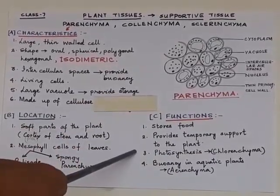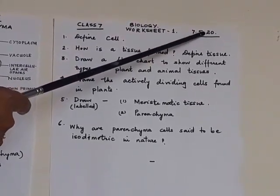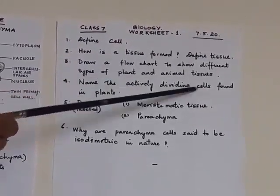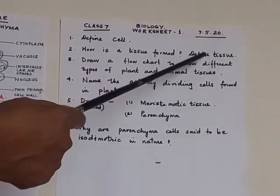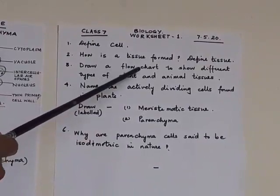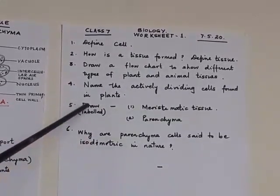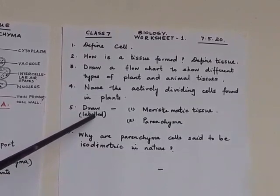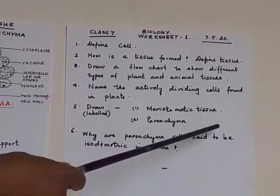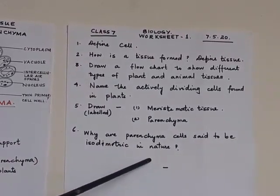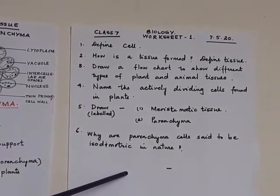That is all about parenchyma. Along with this, here is a biology worksheet for Class 7. Question 1: Define cell. Question 2: How is a tissue formed? Define tissue. Question 3: Draw a flow chart to show different types of plant and animal tissues. Question 4: Name the actively dividing cells found in plants. Question 5: Draw a labelled diagram of meristematic tissue and parenchyma tissue. Question 6: Why are parenchyma cells said to be isodiametric in nature? You will do the worksheet on whatever paper or stationery you have — the work should be neat and clear.